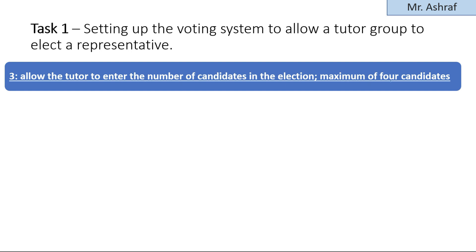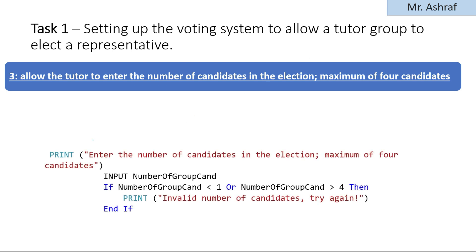Let's start with point number three — allowing the tutor to input the number of candidates in the election, with a maximum of four. At the beginning you should prompt the user, meaning you should show an appropriate message telling them to enter the number of candidates and notify them of the maximum of four. We use the PRINT keyword for prompting and the INPUT keyword to receive the data, storing it in a variable called 'number of candidates'.